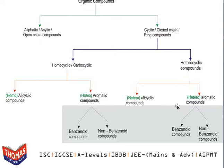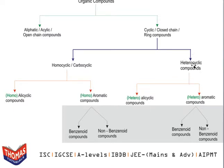These cyclic compounds are further divided. Whether homocyclic or heterocyclic, they are further divided into alicyclic compounds or aromatic compounds. From homocyclic, we get homo-alicyclic and homo-aromatic compounds. From heterocyclic, we get hetero-alicyclic and hetero-aromatic compounds. We will first discuss homo-alicyclic and homo-aromatic, then hetero-alicyclic and hetero-aromatic, and only after discussing all four will we address the final gray-shaded category.